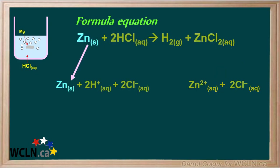Solid species in the formula equation are not in the form of ions, so they remain in the solid form, unchanged in the equation. Similarly, gases do not occur as ions and remain in the molecular form, unchanged in this equation.